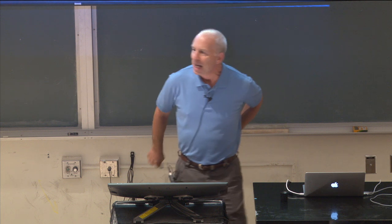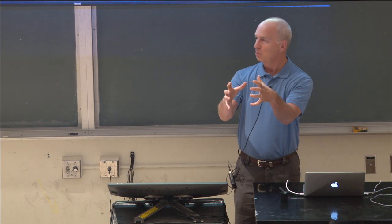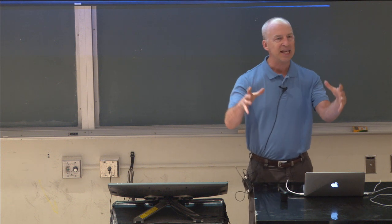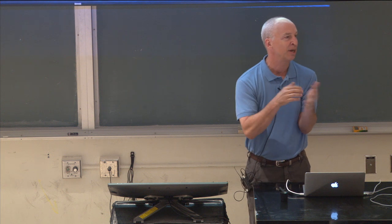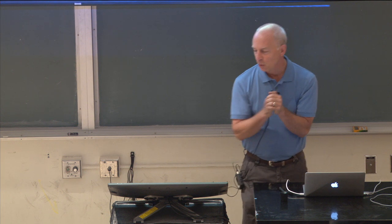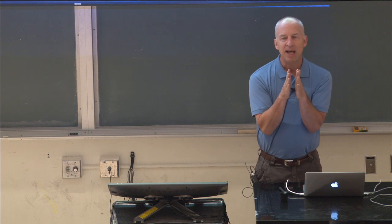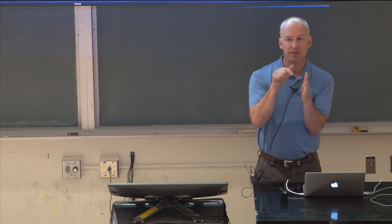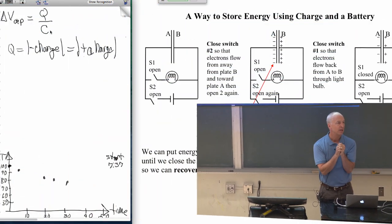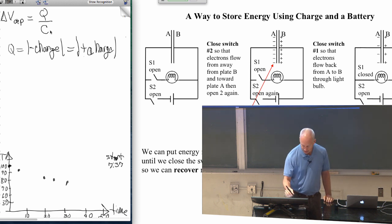Capacitance doesn't have a size like the volume of a container has a size. I can't put more liquid in that than a certain amount. Plates on the other hand, metal plates—what determines how much charge you can put on it is mainly how much voltage you have available. Because higher voltage will push more charge onto it.